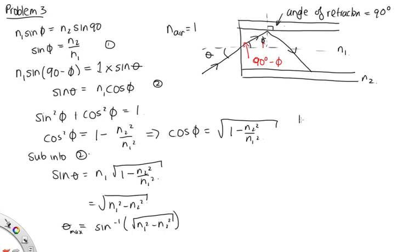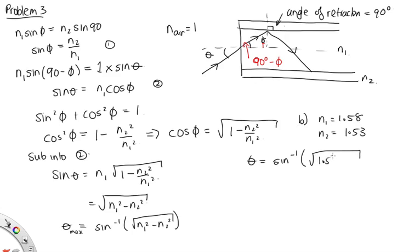Part B tells us N1 = 1.58 and N2 = 1.53, and asks us to calculate theta. So theta = arcsin(√(1.58² − 1.53²)). Solving on the calculator gives 23.2 degrees, to three significant figures, consistent with the three significant figures given for N1 and N2.